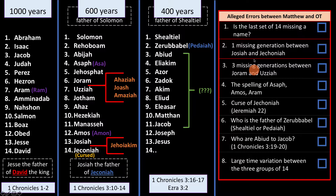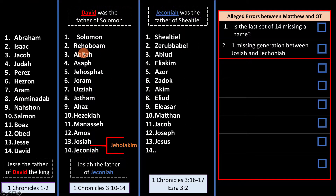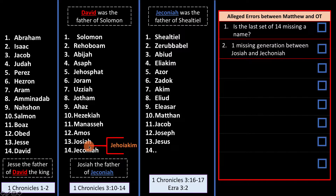Hopefully you watched the last video in which I explained all this. Right now we're going to clear the board and deal with the first two alleged errors: why has Matthew skipped a name at the end of his third column, and why has Matthew skipped Jehoiakim at the end of his second column? What we're going to find out is that these two alleged errors actually explain each other.